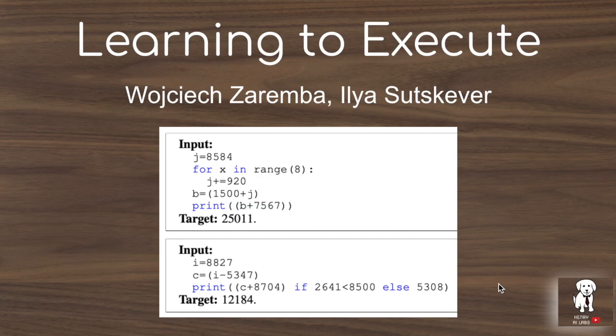This video will present the paper 'Learning to Execute', which tackles the problem of using sequence-to-sequence encoder-decoder LSTMs to predict the output of a Python program. The recurrent network takes in the Python program character by character — for example, 'j equals 8' — and is trained to produce the output you would get from running that block of code. This paper also explores the role of curriculum learning and different strategies of presenting programs to a randomly initialized LSTM.